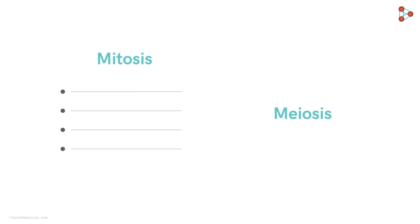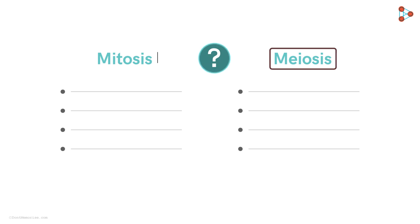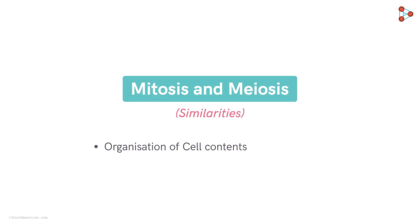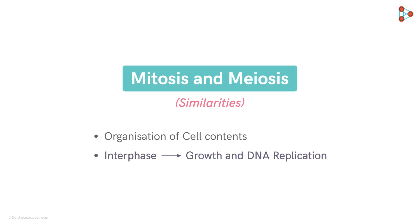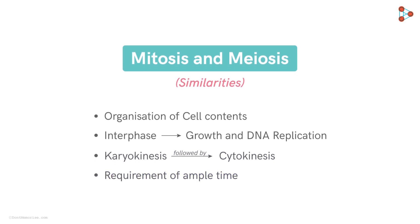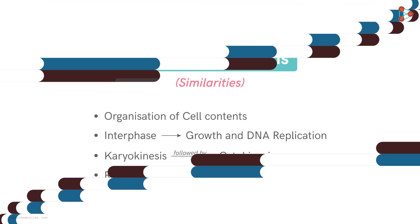Just like mitosis, the cell during meiosis also goes through a number of orchestrated steps. Meiosis is a lot like mitosis, but they have some major differences as well. The similarities include: the cell goes through similar stages and uses the same strategies to organize and separate chromosomes. It goes through interphase for growth and DNA replication, then enters karyokinesis followed by cytokinesis. Both processes require ample time to prepare for the actual division.